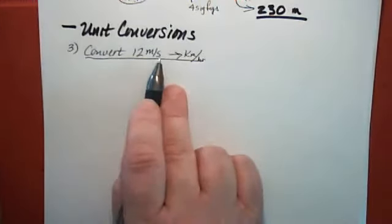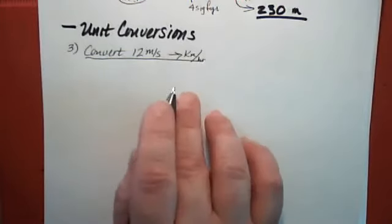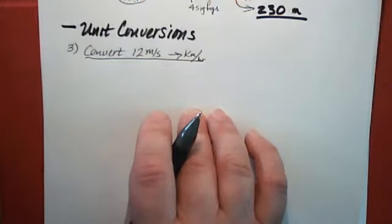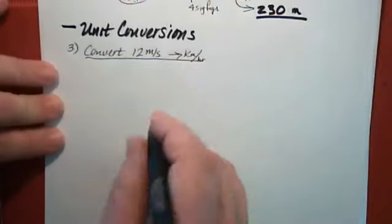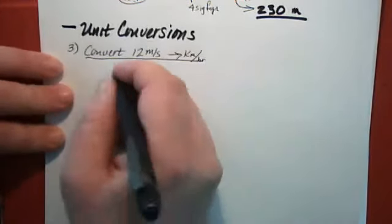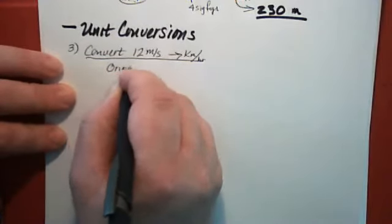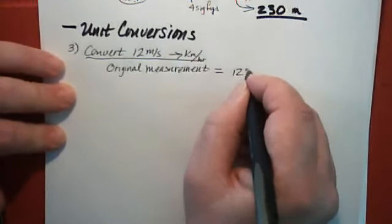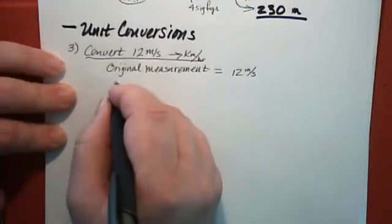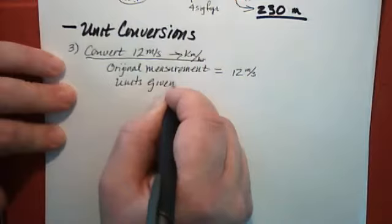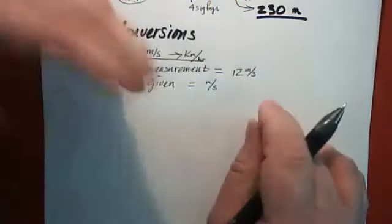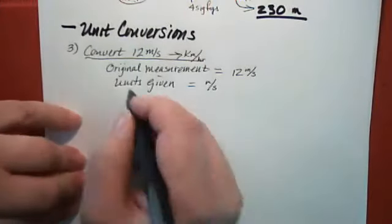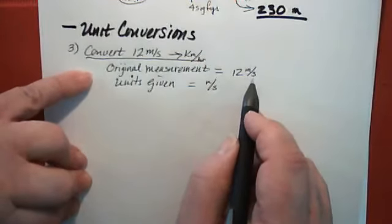If you have to convert meters to kilometers and seconds to hours separately, that takes several steps and can get complicated. Fortunately, there is a conversion factor that allows us to do this in one step. So, convert 12 meters per second to kilometers per hour. The original measurement is 12 meters per second — units of speed, meaning the distance covered in a given time. This object was traveling 12 meters for every second.